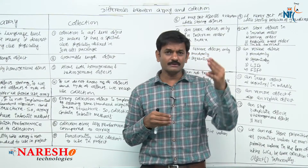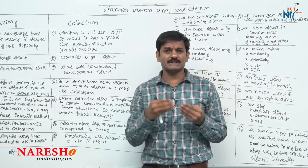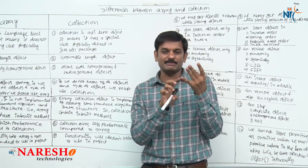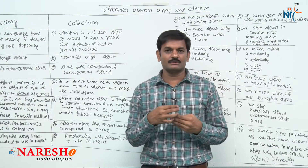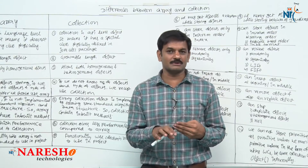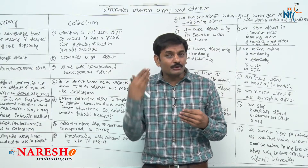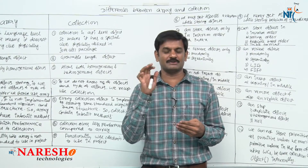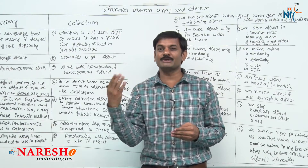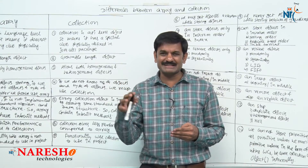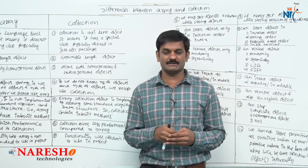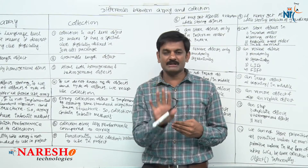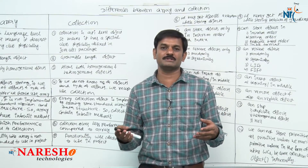Fourth difference — when to use array and when to use collection: based on the second and third points (fixed length and homogeneous objects), if prior to storing objects you know how many objects and what type of objects to store, it is better to use array. If you do not know how many objects or what type of objects to store, you must use collection — there is no other option. Collection is growable in nature, so capacity is automatically increased as needed.